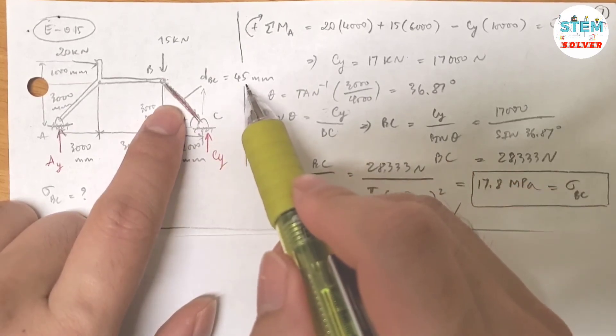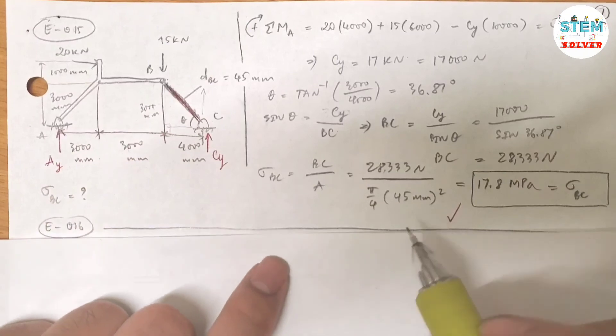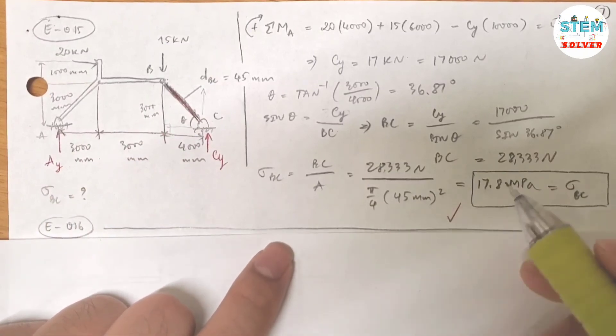And you are given the diameter of 45 mm, so every information is given, so you should be able to find the normal stress.